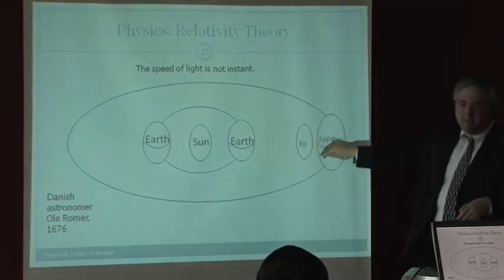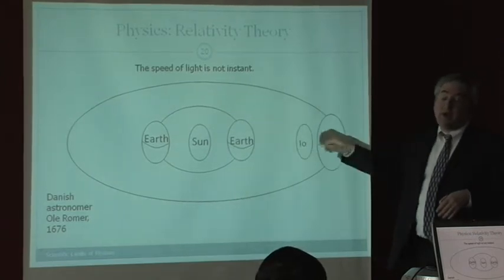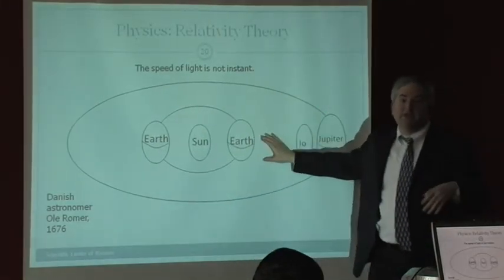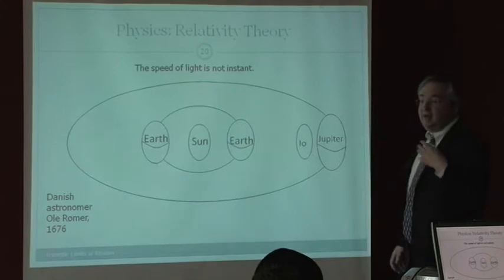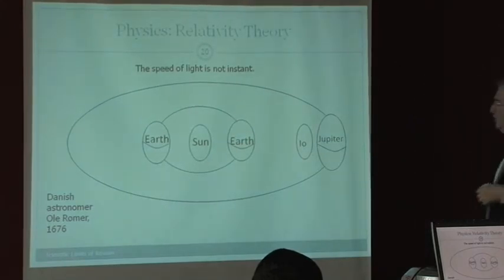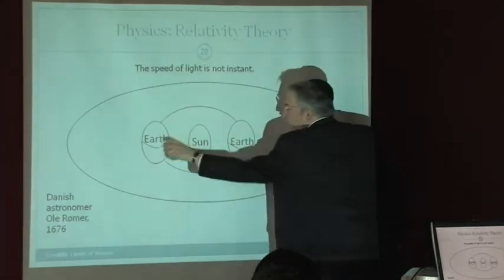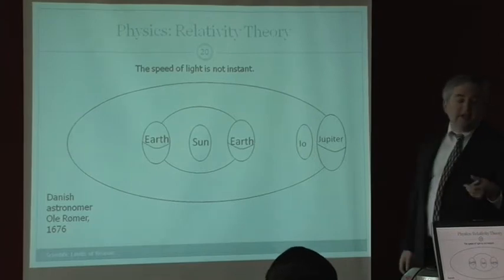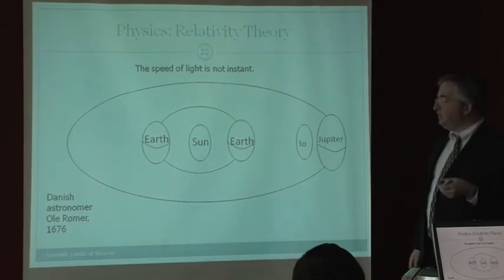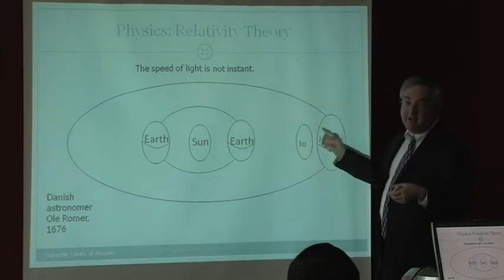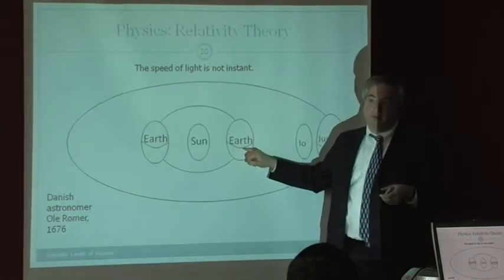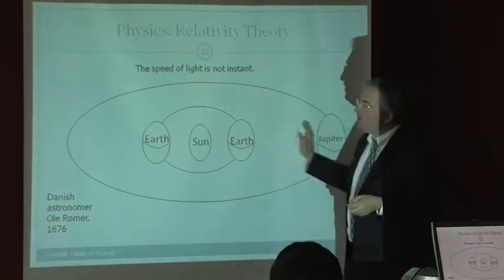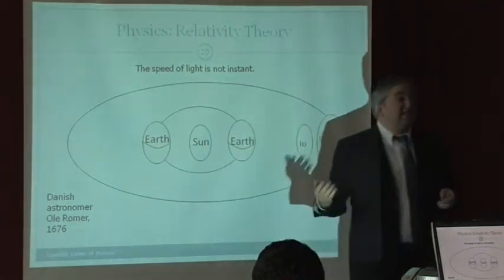And he sees that the time Io takes to go around Jupiter takes longer when he's over here than when he's over here. He's an astronomer. He knows when he's over here and he knows when he's over there. Now, he wonders why. Why should it be that Io takes longer when he's here than when he's there? Now, the answer is as follows. What he calculated was that it takes longer for the light of Io to come all the way here as opposed to come all the way there. Now, he does some calculations.